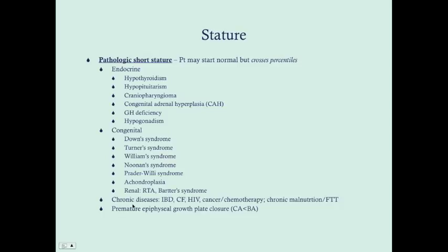Chronic diseases can stunt growth, including inflammatory bowel disease, cystic fibrosis, HIV infection (usually congenital in children), cancer, and chemotherapy. Chronic malnutrition and failure to thrive will also manifest as short stature, especially if chronic. Premature epiphyseal growth plate closure — caused by hyperthyroidism and precocious puberty — means the bones mature faster than they should, so bone age will be greater than chronologic age.